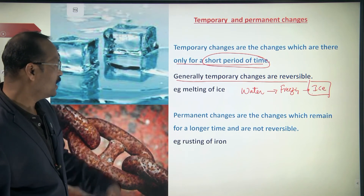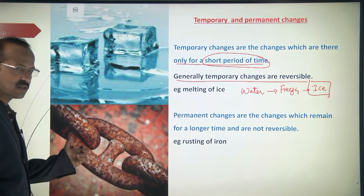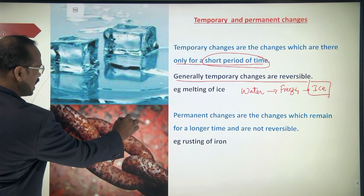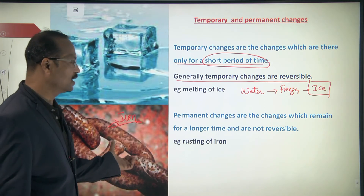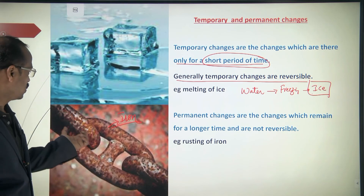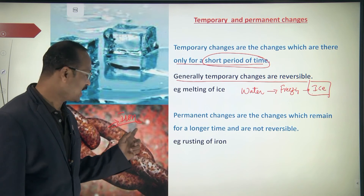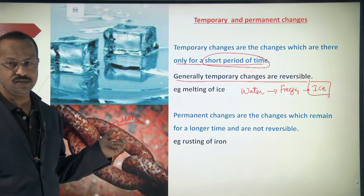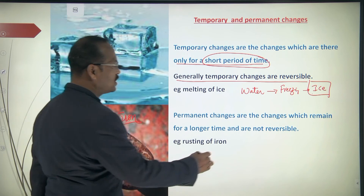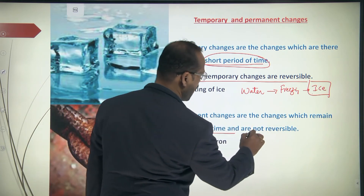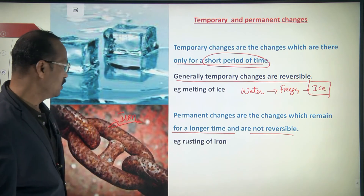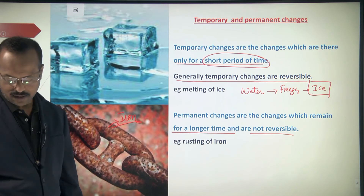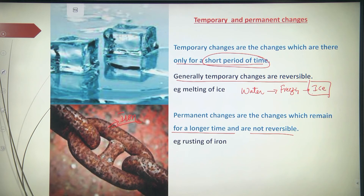A permanent change example is rusting of iron. A chain made of iron, kept in moisture or water over a long period, becomes rusted. Once it gets rusted, you cannot change it back to pure iron. Permanent changes remain for a longer time and are not reversible — rusting of iron is a clear example of this.